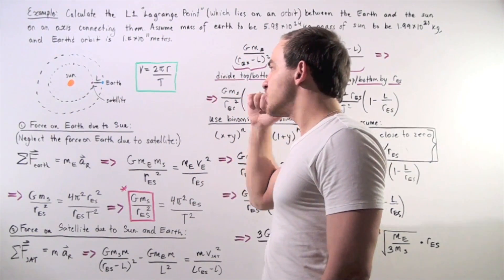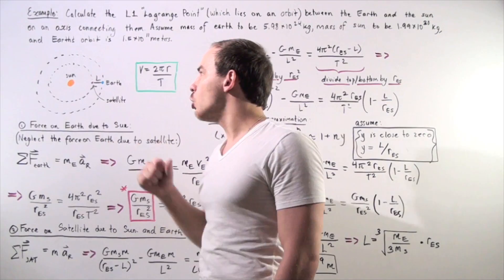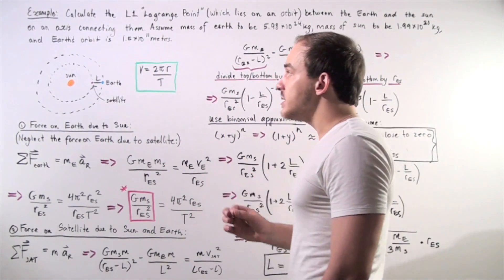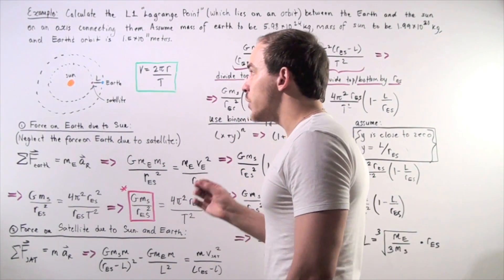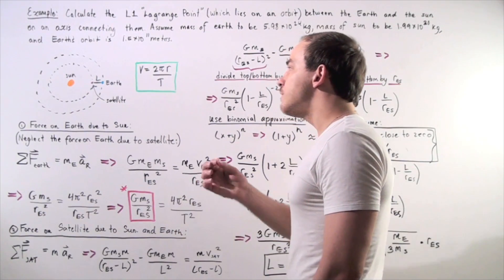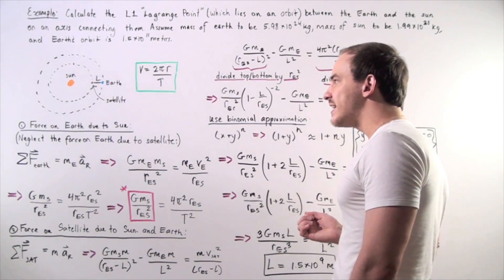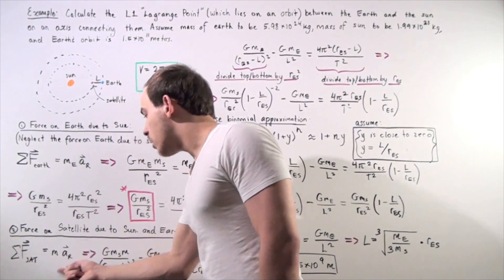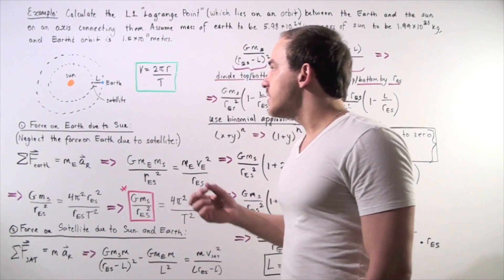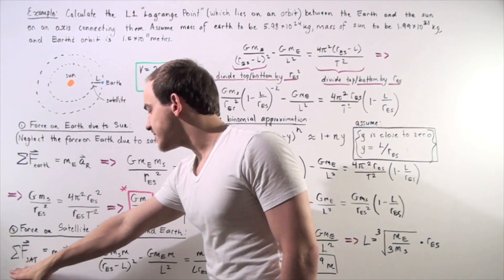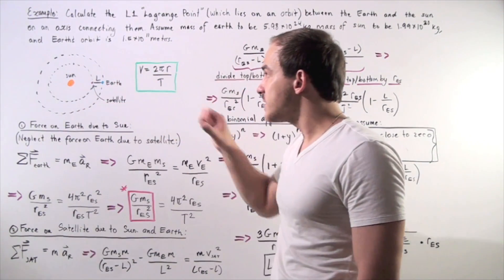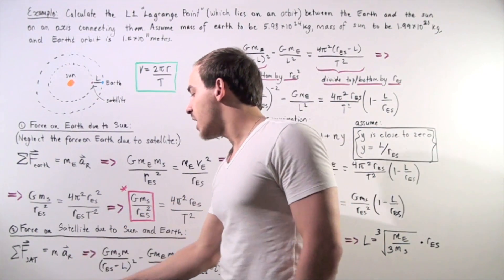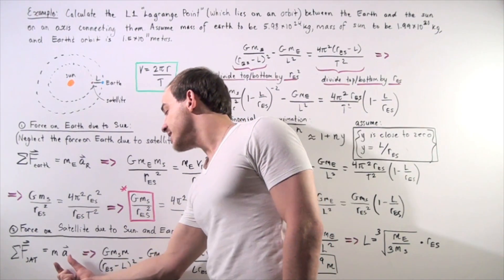We choose the direction going in the negative direction along the x-axis to be positive. So the force created by the Sun is positive, and the force created by the Earth is negative. Let's apply the second law of motion.